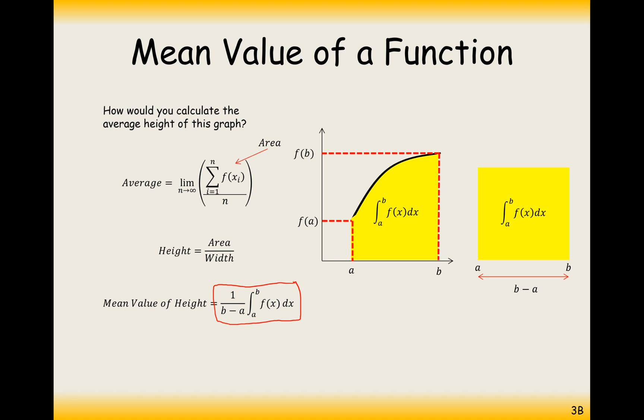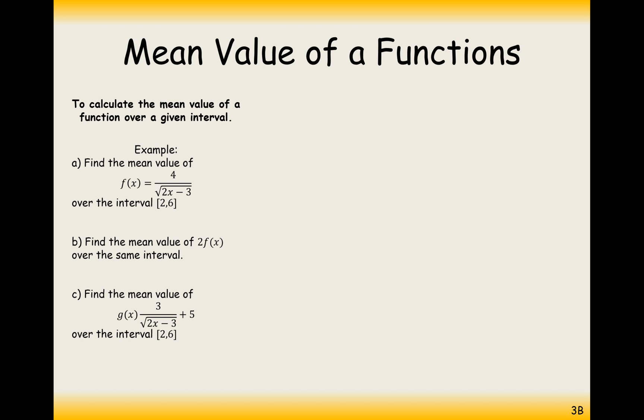So when it says the mean value of a function, it's effectively saying what's the average height of this graph, the output, the average output. And this is how you're working it out. Write this formula down. This is the one we're going to be working with.